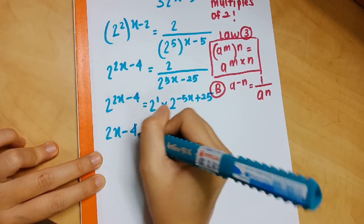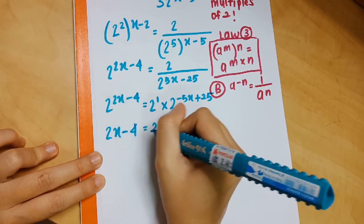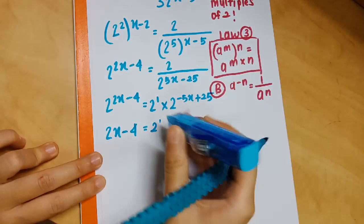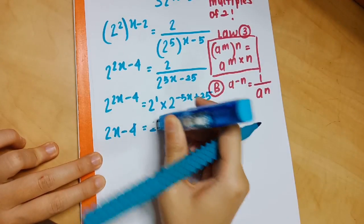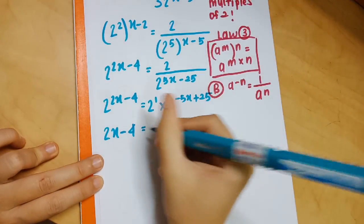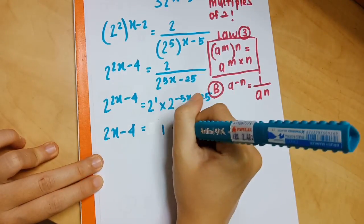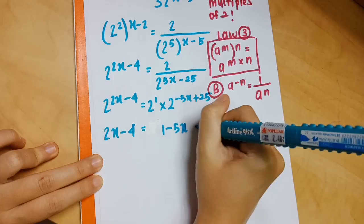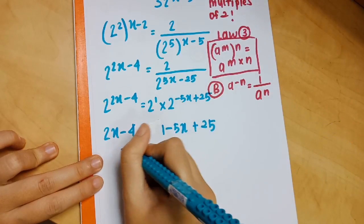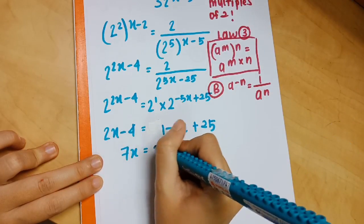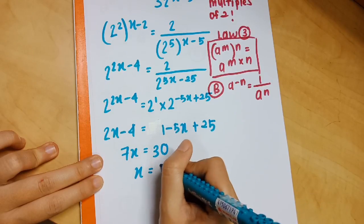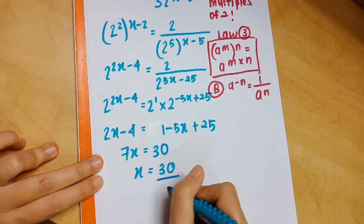Now that everything is under base 2, you can compare the exponents. You get 2x − 4 = 1 − 5x + 25. Shifting all x terms to one side and numbers to the other, the value of x is 30 over 7. That is your final answer.